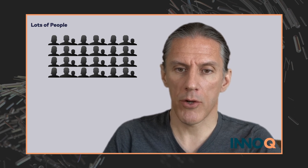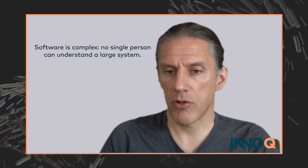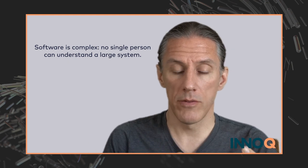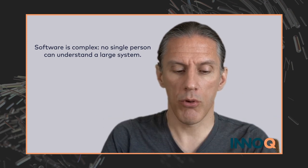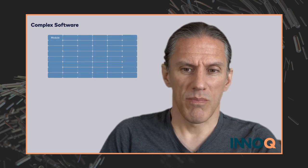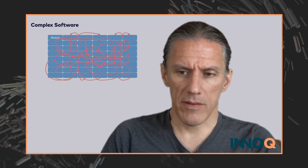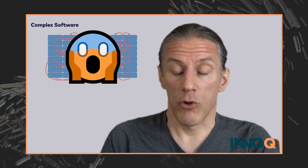Obviously there are people developing software, and more often than not it's quite a few people working on a system. The problem is that no single person can understand such a large system, because there are so many people working on it — it's hard to understand what all of them are doing every day in terms of code output. So you end up with complex software with lots of modules and complex relationships between them, and that's the main problem we face today.